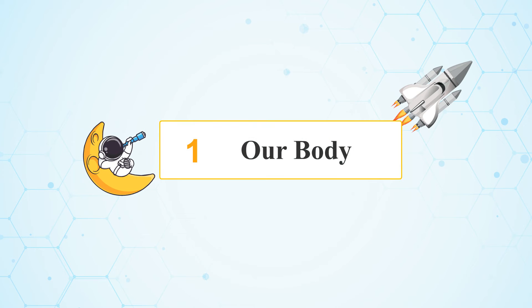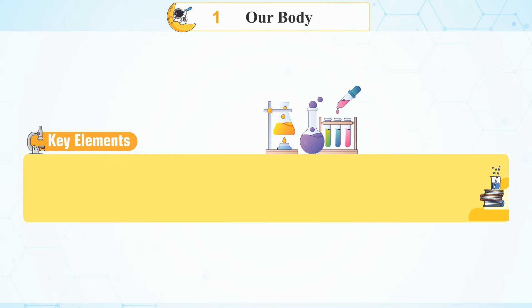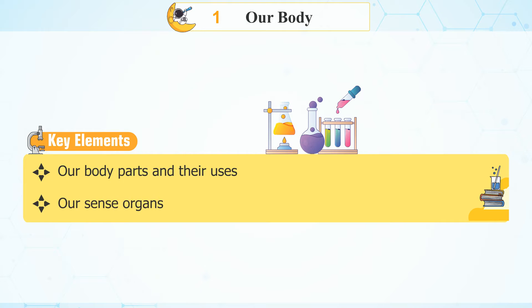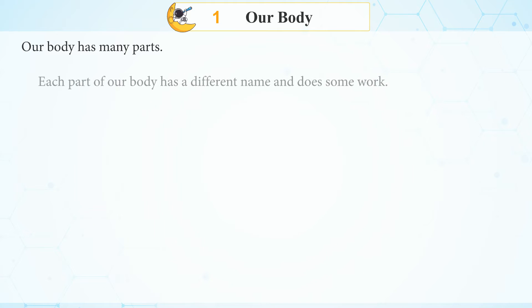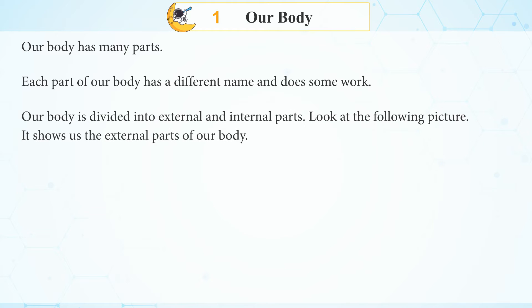Chapter 1. Our Body — Key Elements. Our Body Parts and Their Uses. Our Sense Organs. Our body has many parts. Each part of our body has a different name and does some work. Our body is divided into external and internal parts. Look at the following picture — it shows us the external parts of our body.